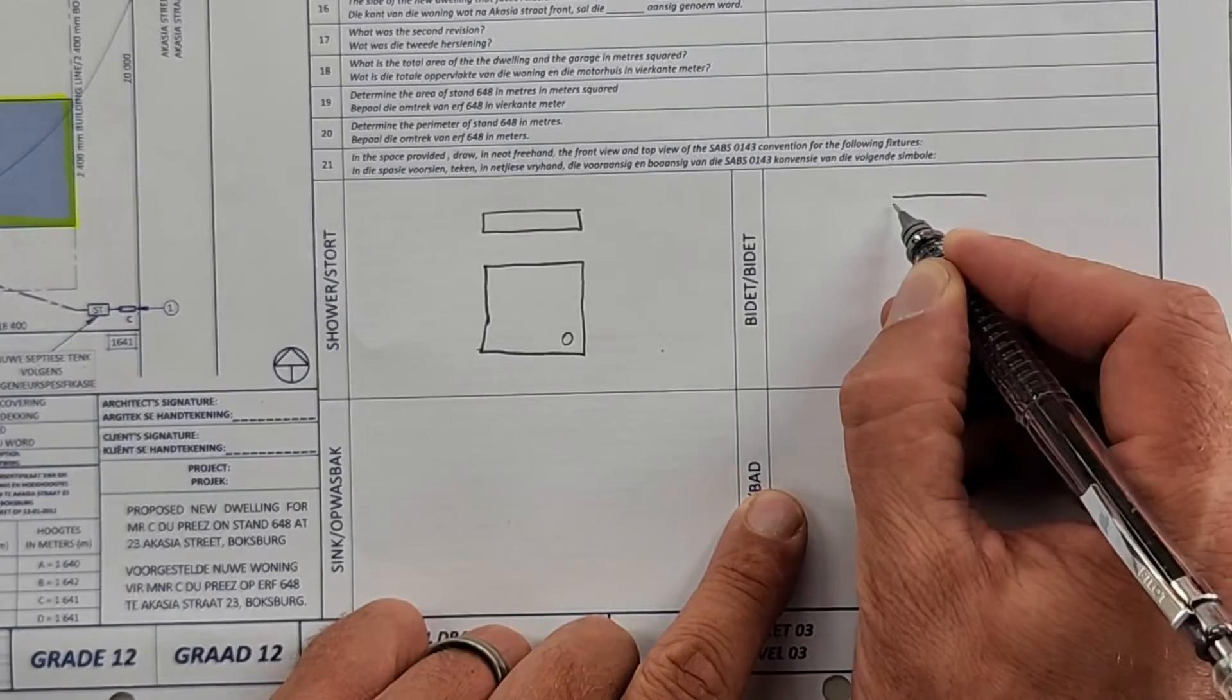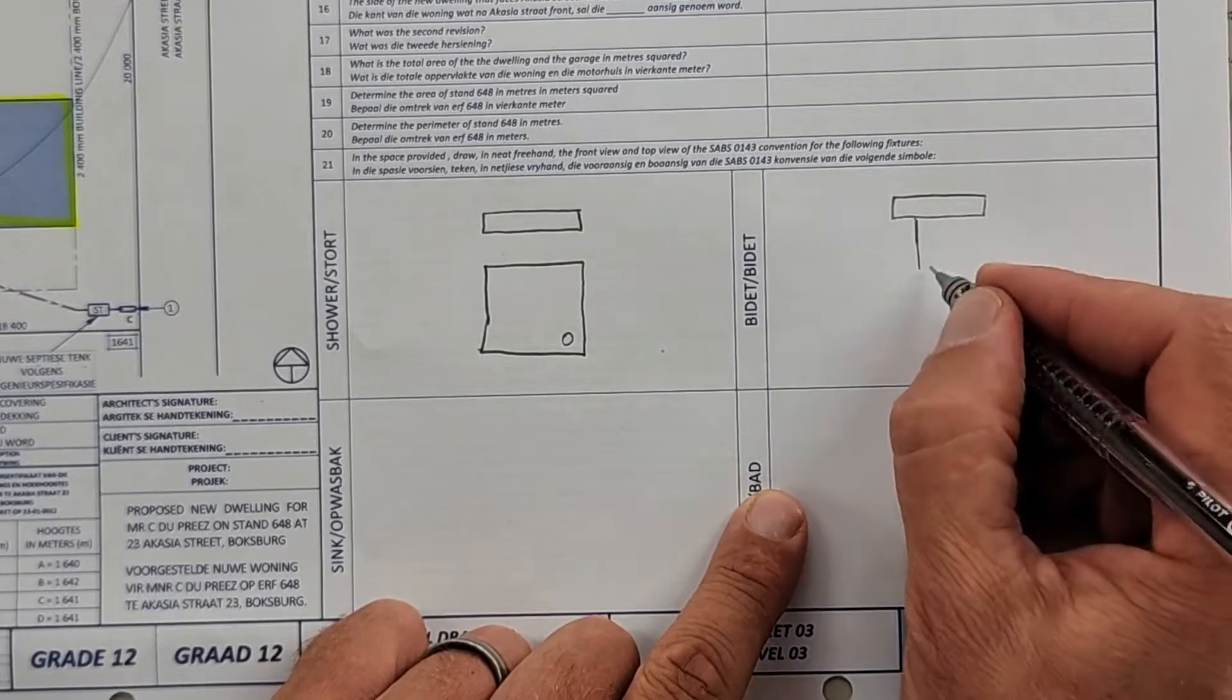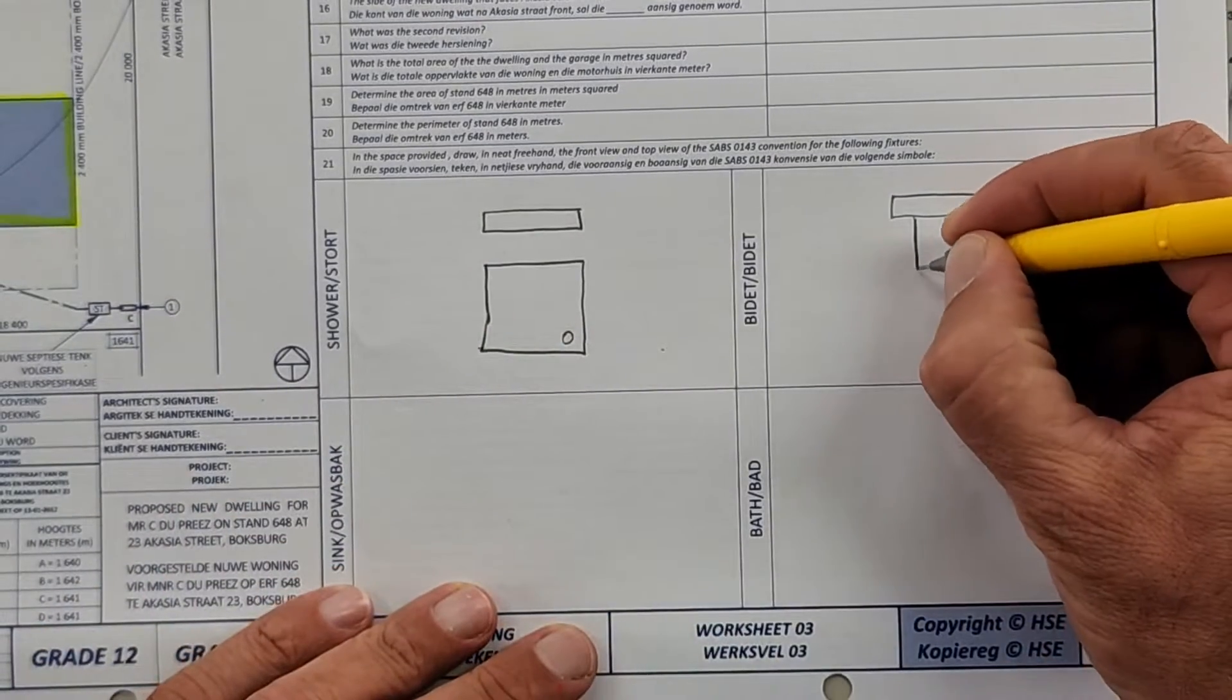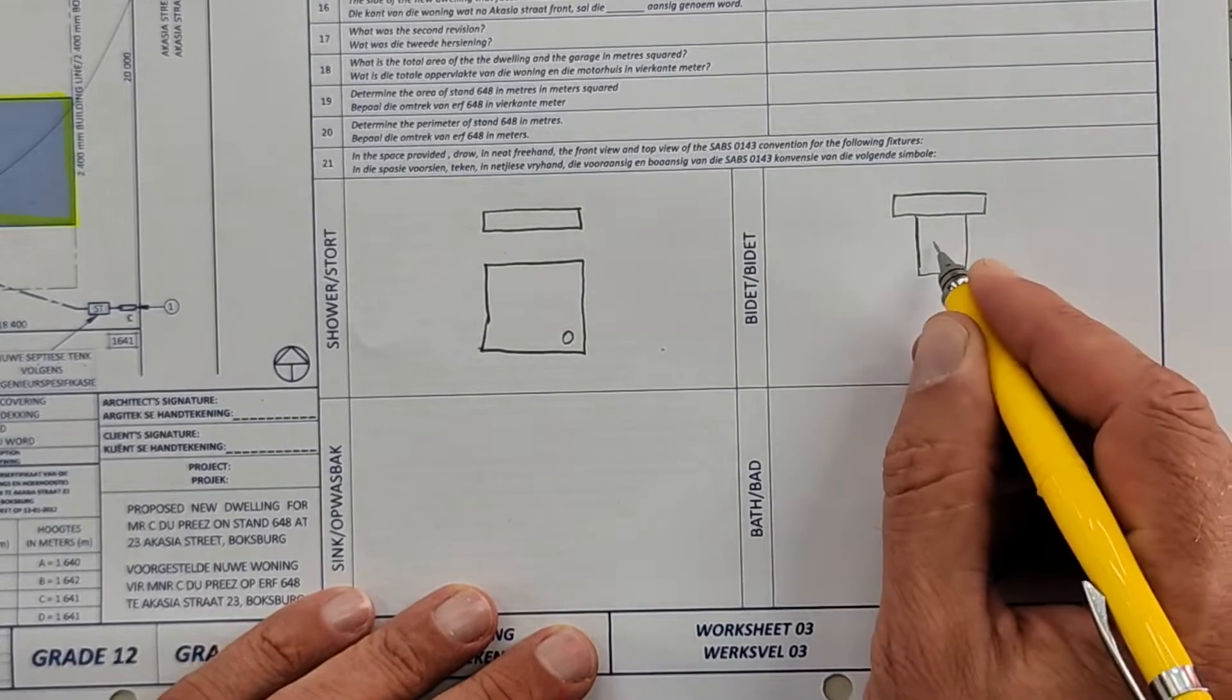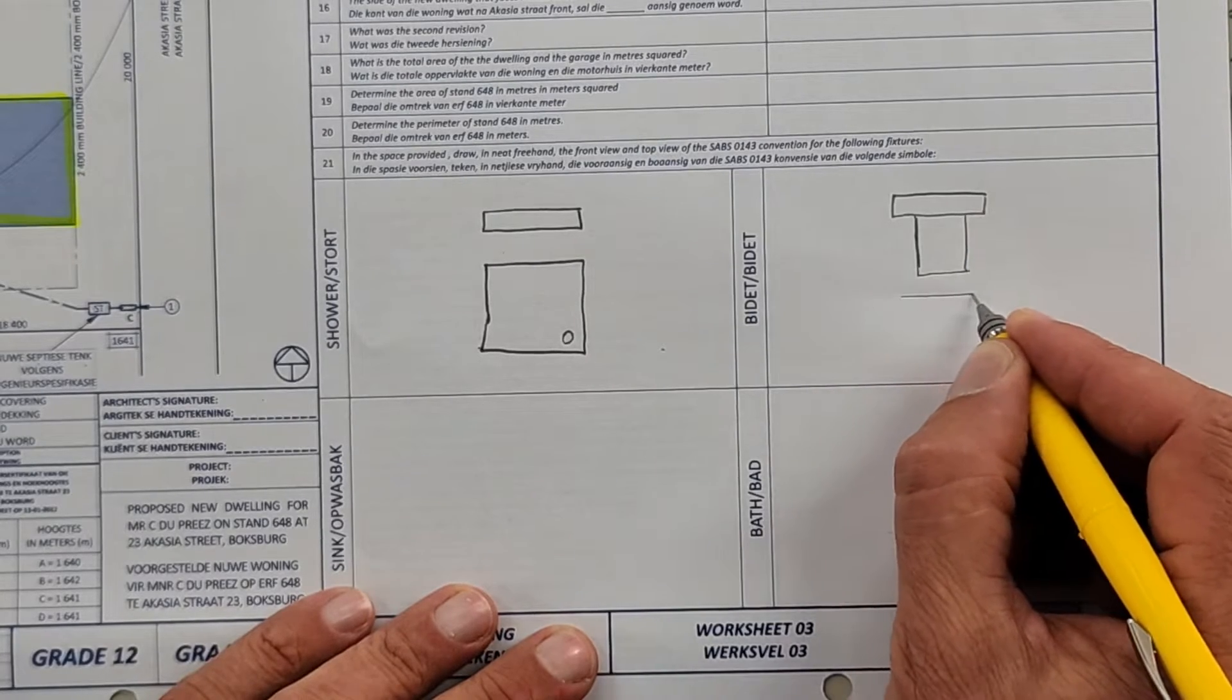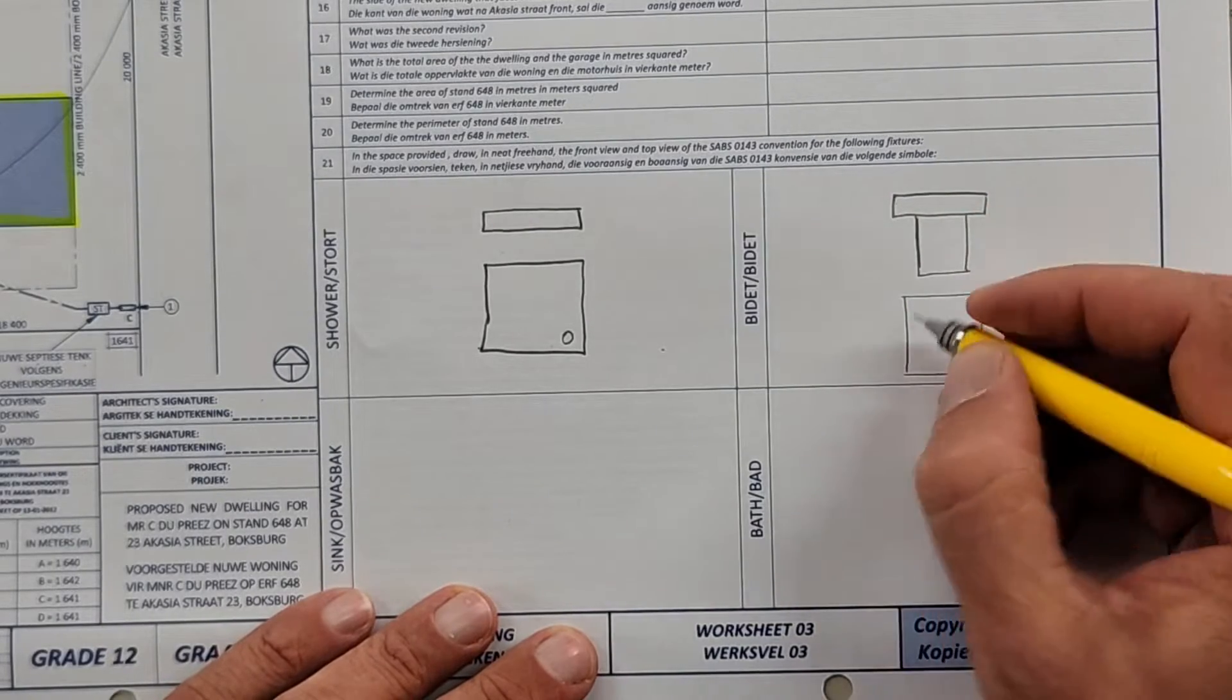I am going to finish this off. The next one is a bidet. This is again the top view that is against the wall and that is the, well technically the seating area here. That is the front view of a bidet and you are going to have to draw this freehand. Oh that is the front view, sorry I apologize. Here is the top view of that bidet. So the same width and then on the inside, and the sprout for that bidet is a little circle like that there.